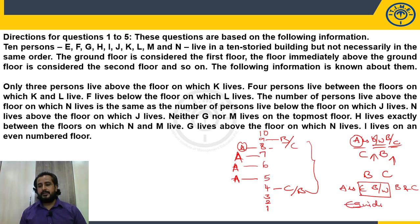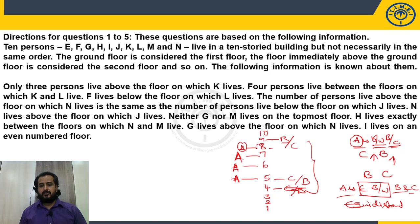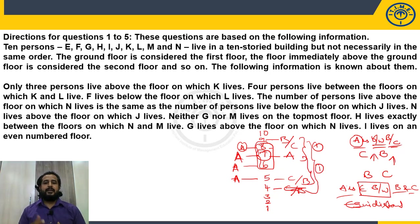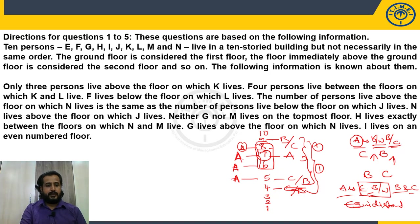Sometimes instead of 'between', they give 'exactly between', which means equidistant. A's floor is equidistant from B's floor and C's floor. For example, if B is on the ninth floor and C is on the fifth floor, there are three floors between them, and the equidistant point is the seventh floor — one gap between B and A, one gap between A and C. This is the meaning of exactly between.